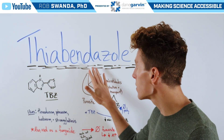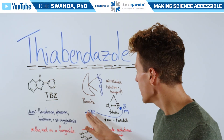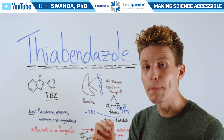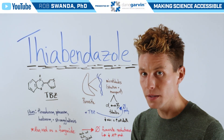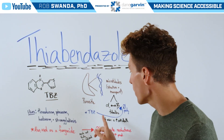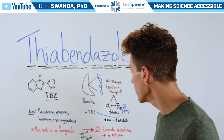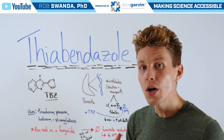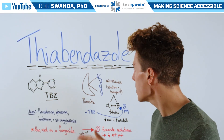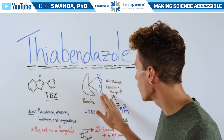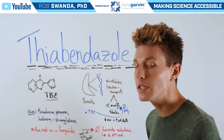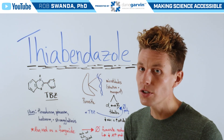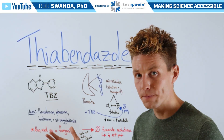However, when thiabendazole is added, it's going to specifically bind to a part on beta tubulin, preventing it from interacting with alpha tubulin. Therefore, because they can't polymerize, we see decreased amounts of microtubules being formed, which leads to increased amounts of cell death.